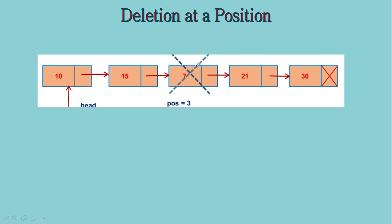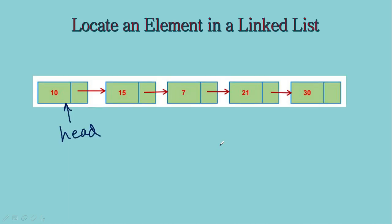Delete at a given position — similar to insert at a position, we have to make a traversal in the linked list. Depending on the position, the complexity in the worst case will be equal to the number of elements in the list. So it's going to be big O of N.